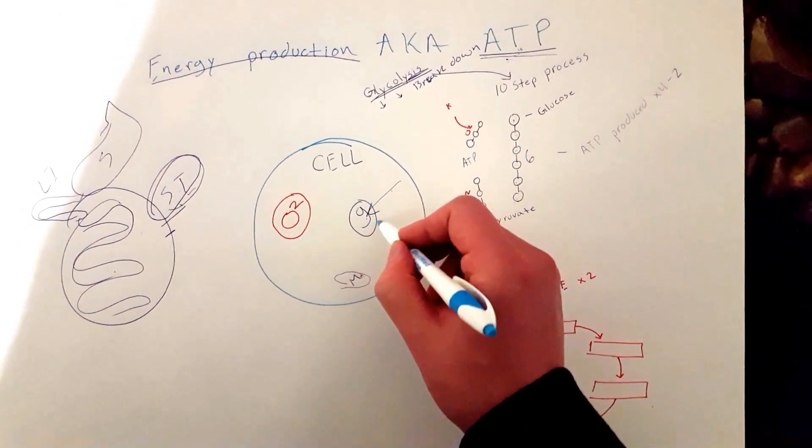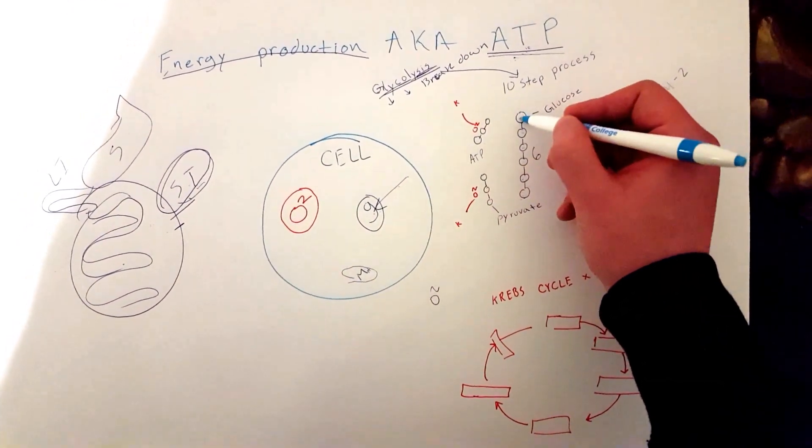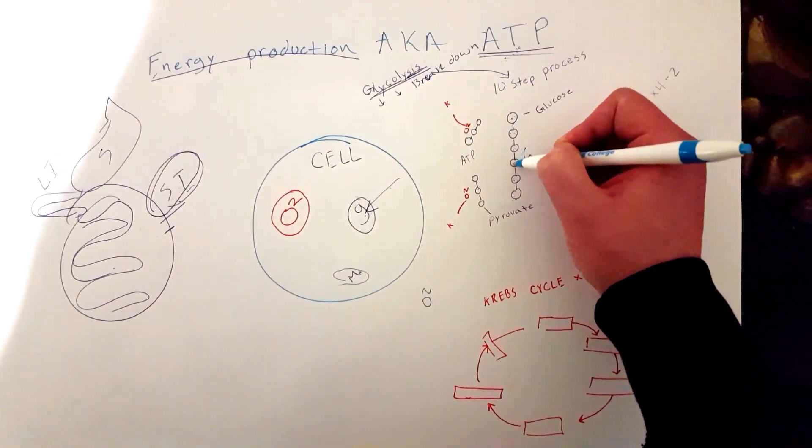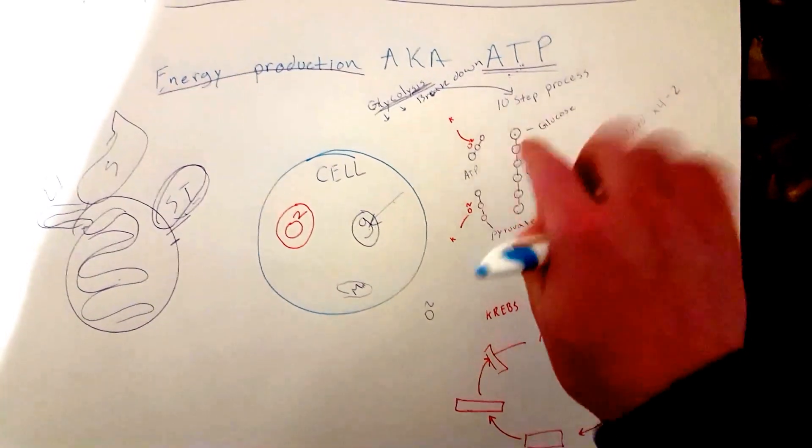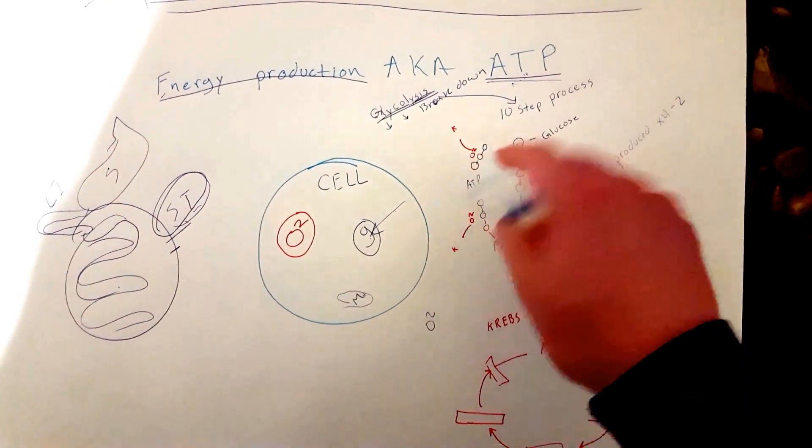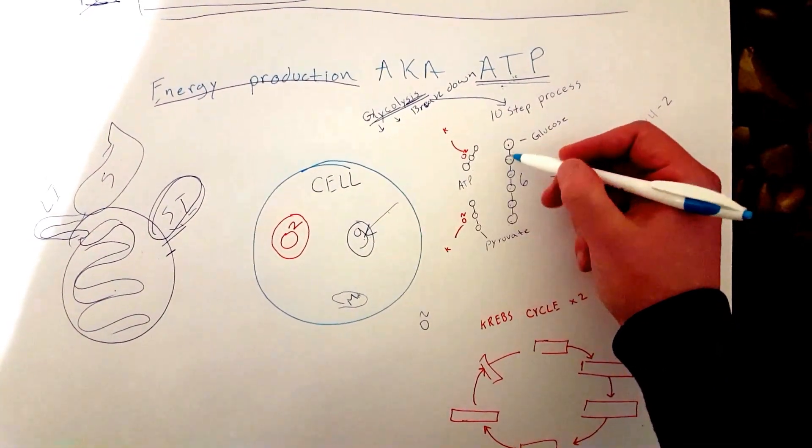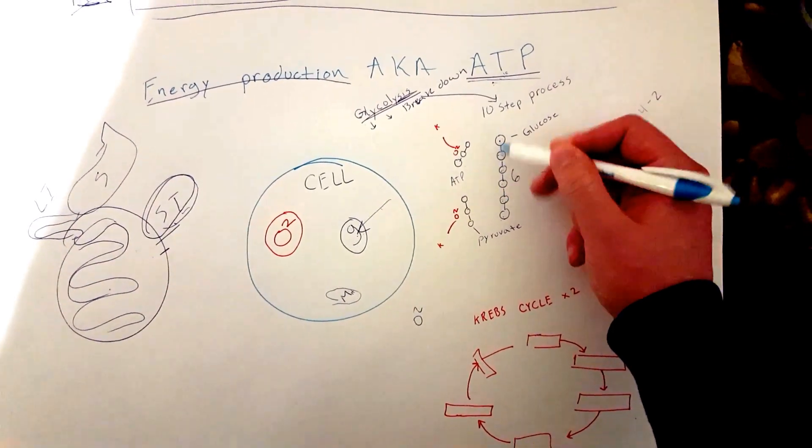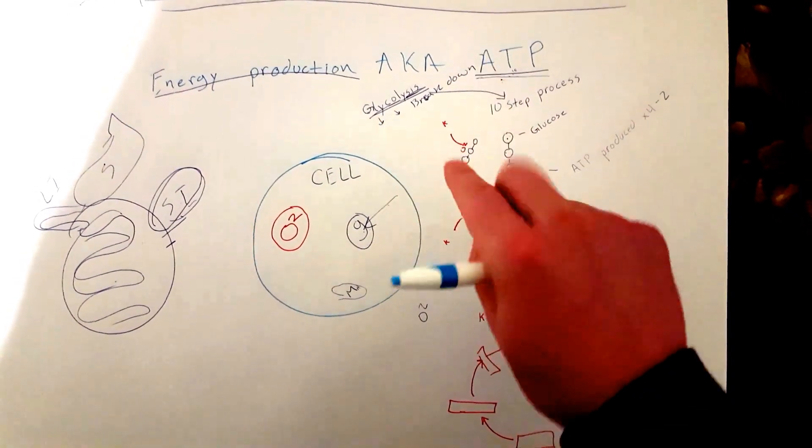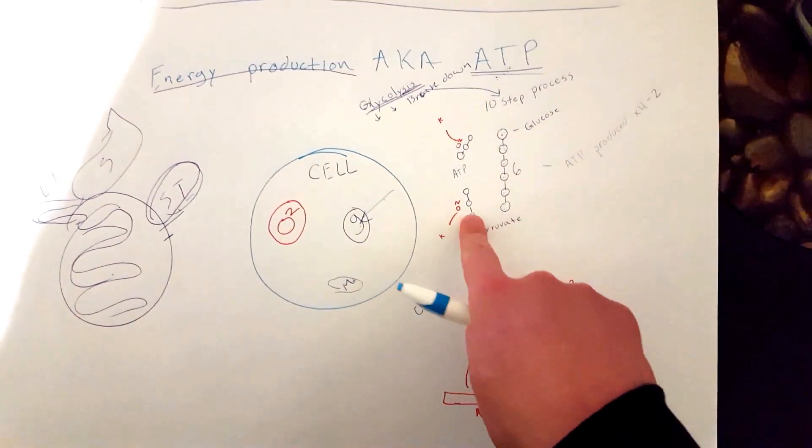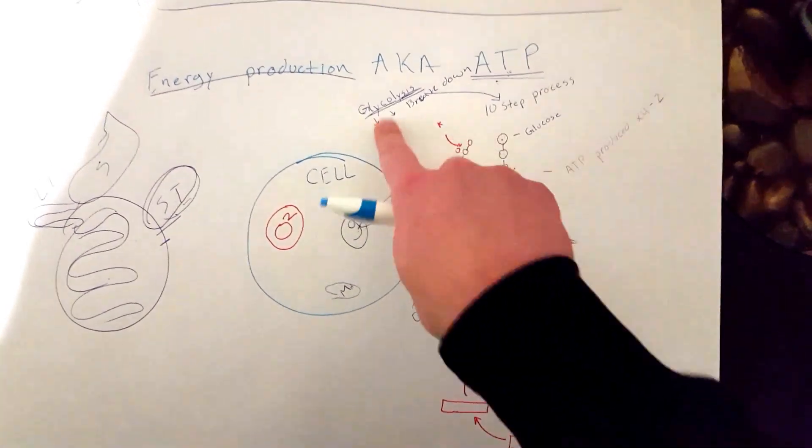once the glucose has entered the cell, the six-molecule glucose, it's going to break down into three different molecules. This entire step of breaking down this cell from six molecules to two individual three molecules, it's going to be split in half, glycolysis.